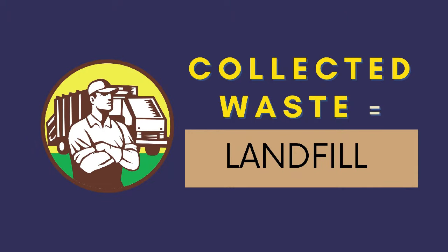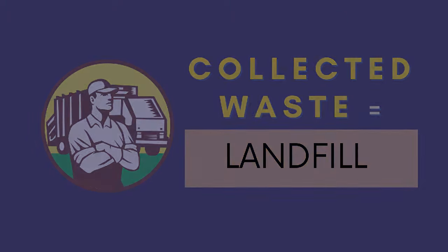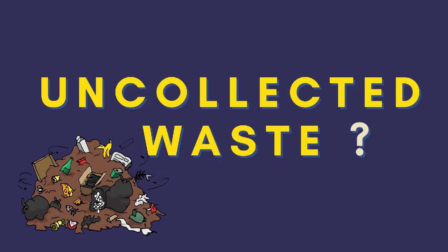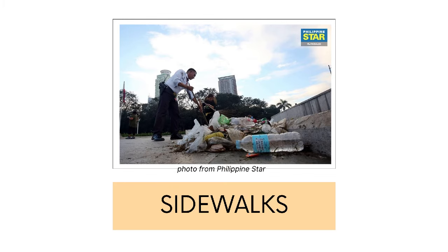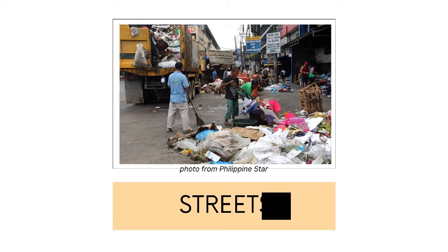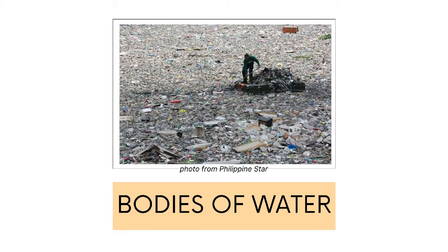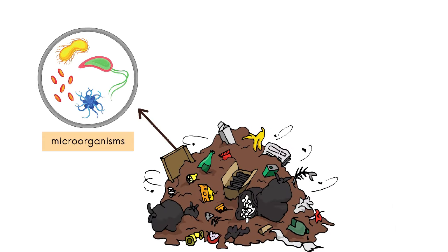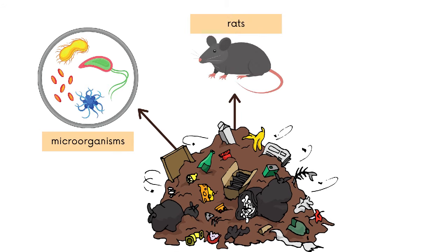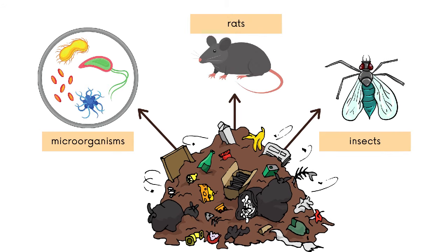All of the collected waste ends up in the landfill. But what about the uncollected waste? Improper waste disposal can be one of the reasons why there is uncollected waste. This waste can clog sidewalks, canals, streets, and even bodies of water. Solid waste can be a breeding ground for microorganisms, rats, and other pests, insects, or other disease-carrying animals. This waste may also contaminate groundwater and affect nearby resources.